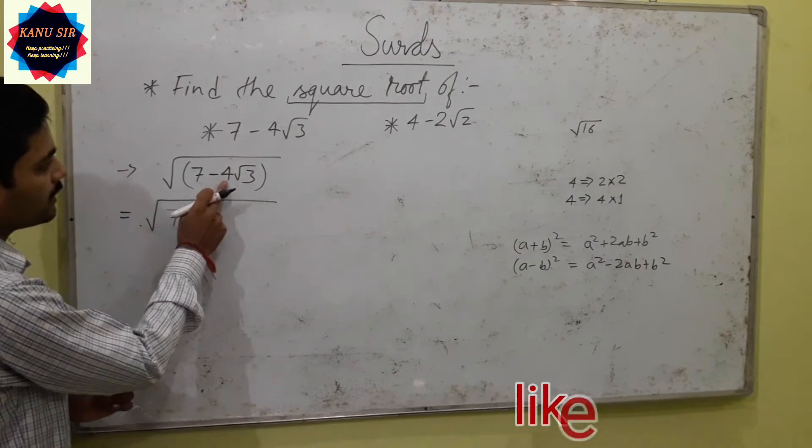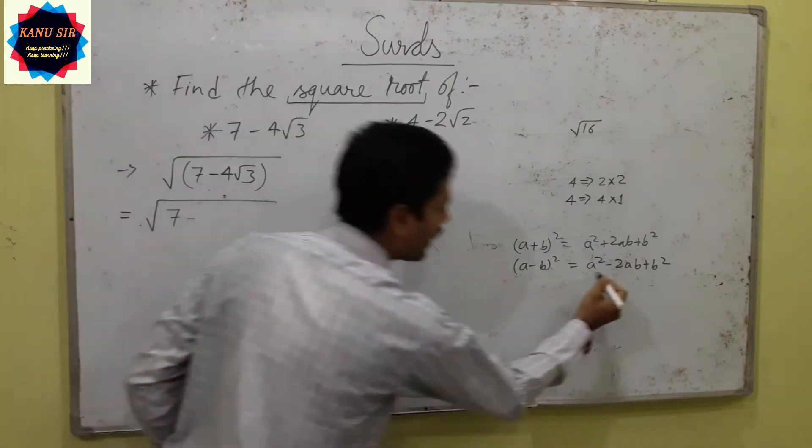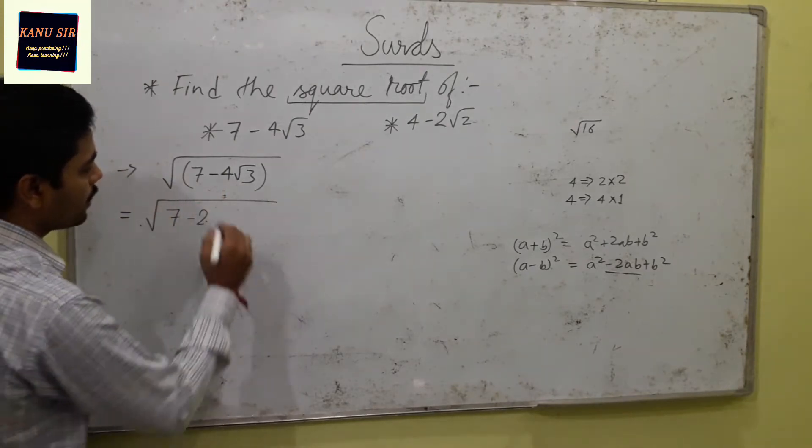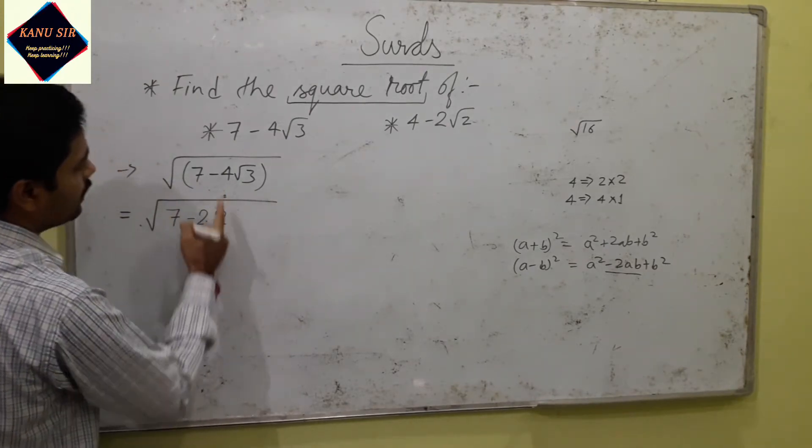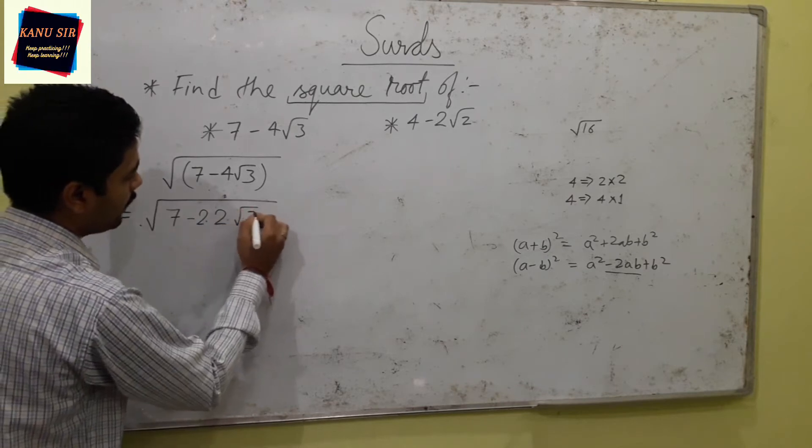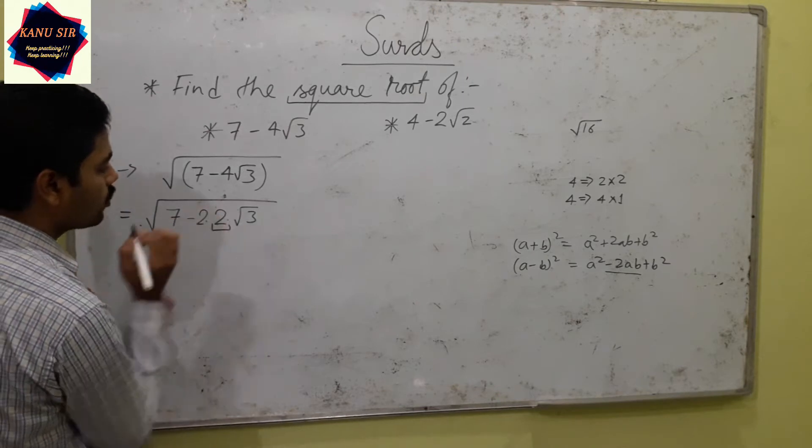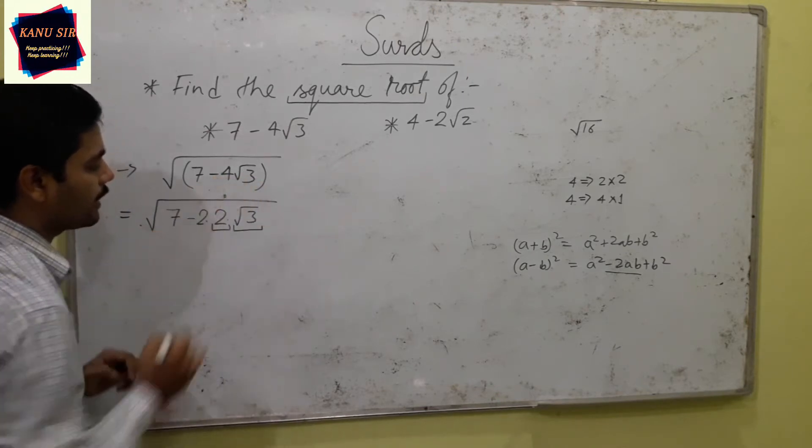We are going to break this 4 root 3 in terms of minus 2ab. So 4 can be broken as 2 and again 2 times 2 will get 4 and root 3 here. So we have got some idea about a and b. This 2 looks like a and root 3 looks like b.